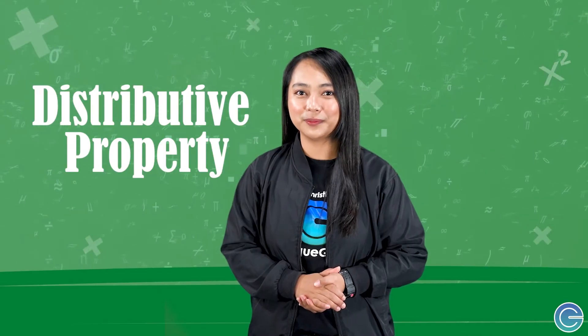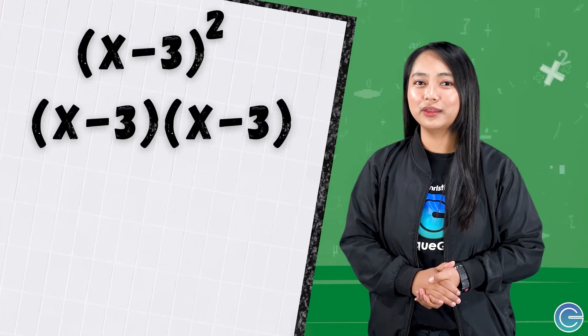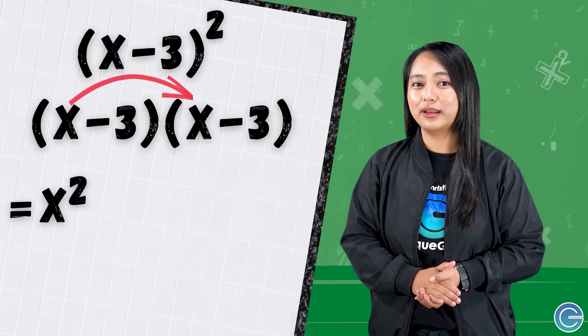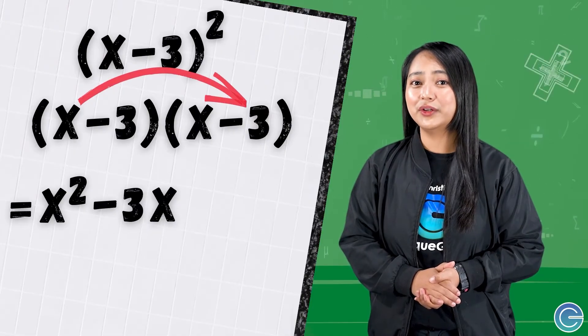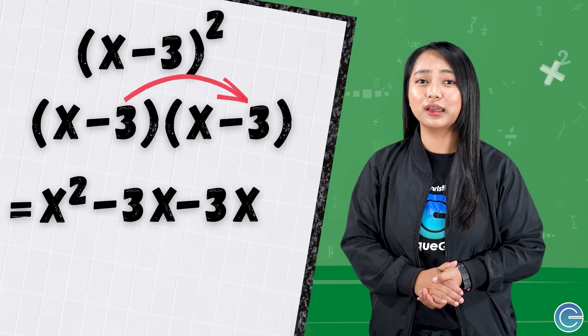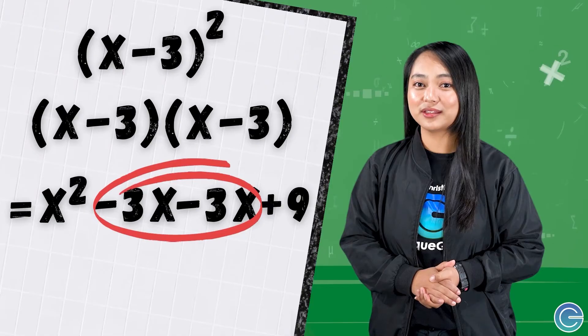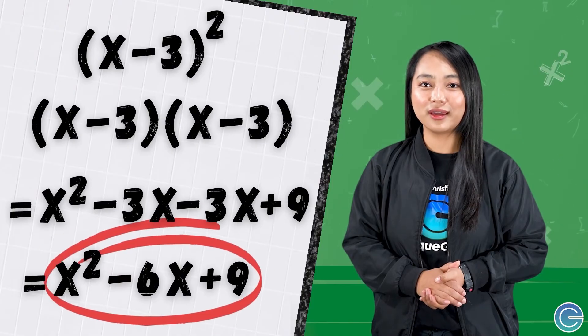FOIL is a quick easy way of remembering how to multiply binomials, but it only works for binomials. If you're dealing with polynomials that have more than two terms you'll have to apply the distributive property. Let's have one more example: the square of x minus 3. Applying the FOIL method — first terms: x times x gives us x squared; outer terms: x and negative 3 gives us negative 3x; inner terms: negative 3 times x gives us negative 3x; last terms: negative 3 times negative 3 gives us positive 9. Combining negative 3x and negative 3x gives us negative 6x, so our final answer is x squared minus 6x plus 9.